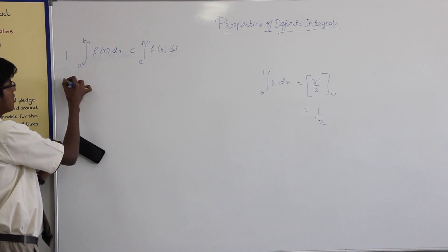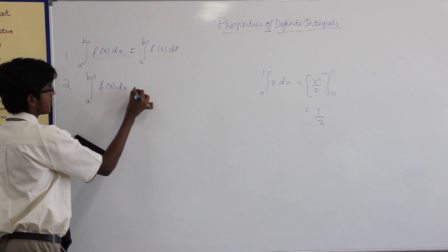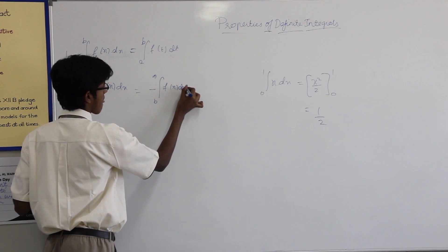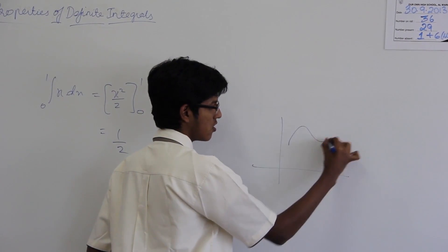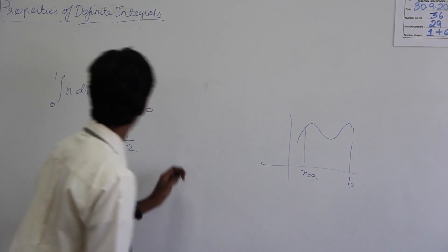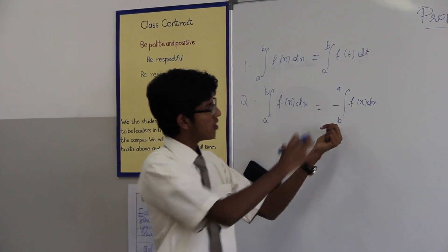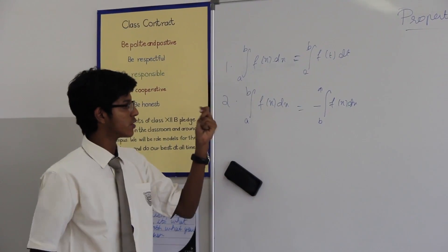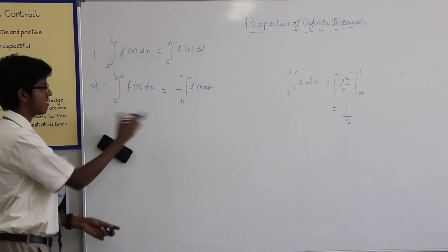The second property states that the integral from a to b of f dx can be written as minus of the integral from b to a of f dx. For example, if you want to integrate a function from x equals a to x equals b, we can use f of x dx from a to b, or minus of the integral from b to a — we will get the same answer. You can cross-check it with this same example and you will see the answer comes out as 1/2.